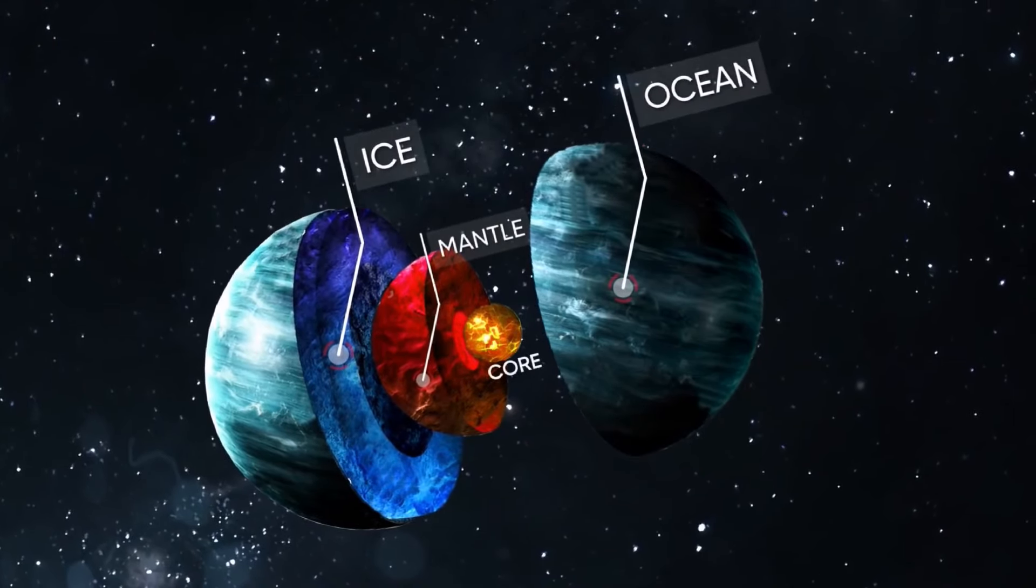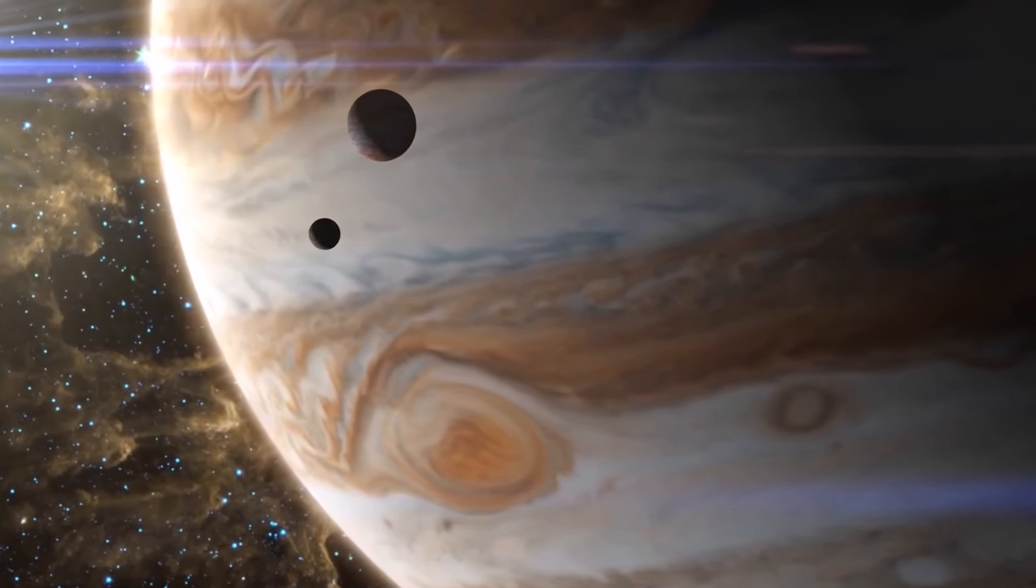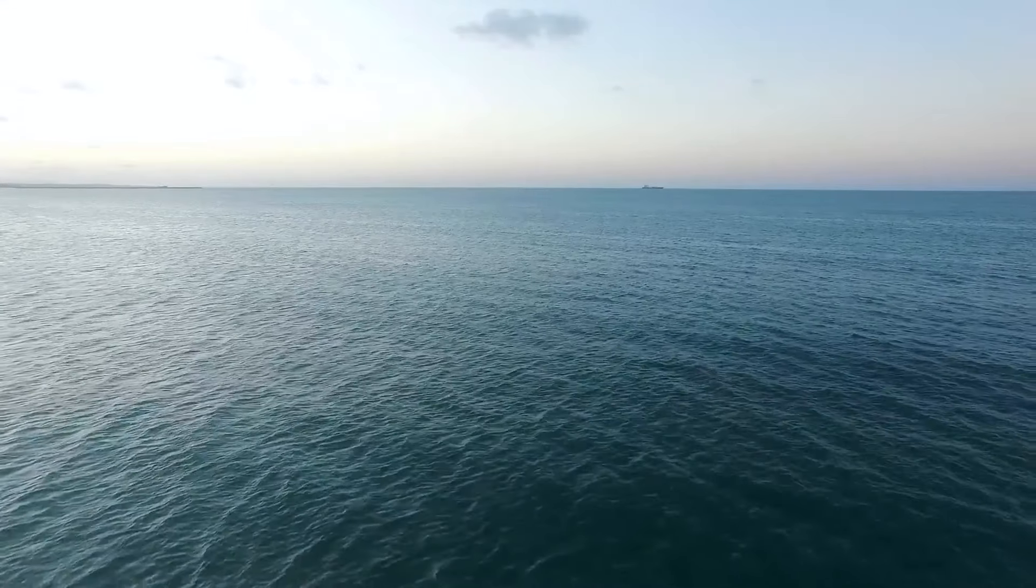But the most intriguing thing about this giant planet is its potential to support life. Scientists believe that the interior of the planet is filled with water ice. Similar to Jupiter, GJ1214b has no land. The surface is literally an ocean.